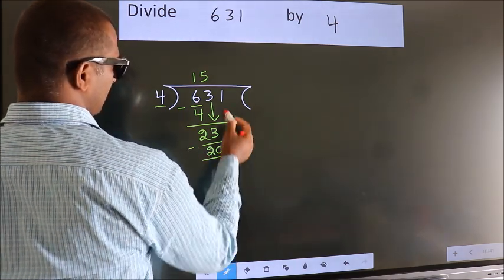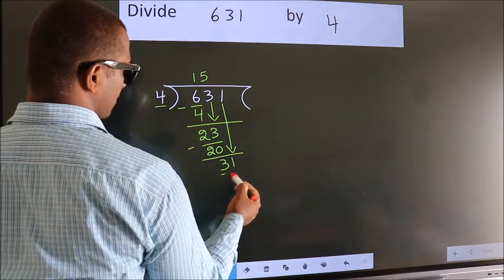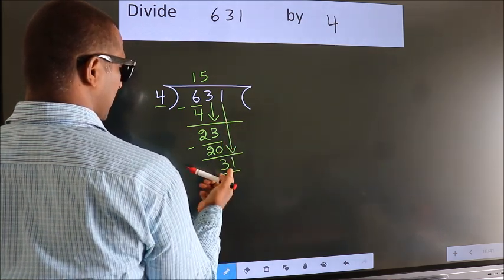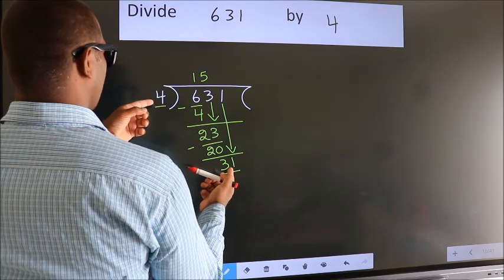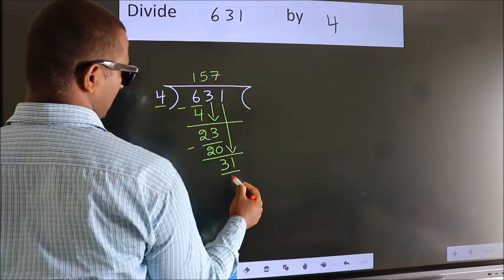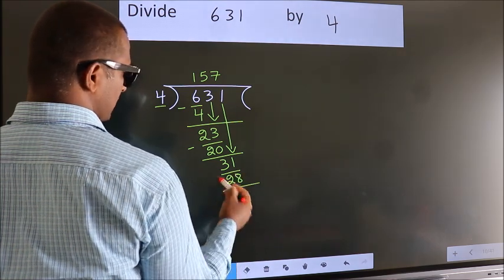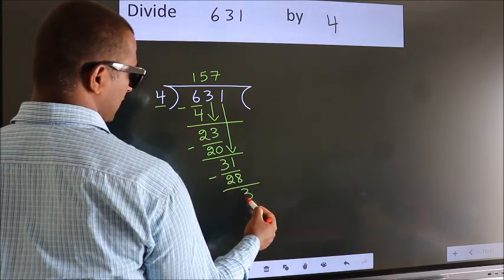After this, bring down the beside number. So, 1 down. So, 31. A number close to 31 in the 4 table is 4 sevens 28. Now, we subtract. We get 3.